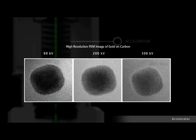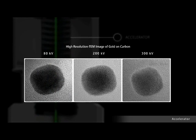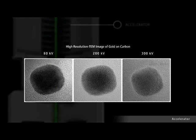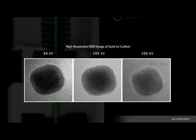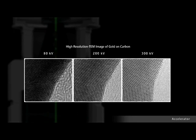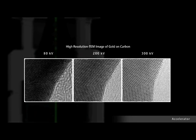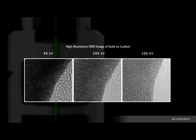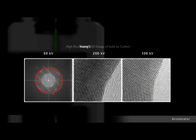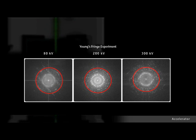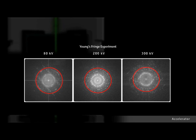This technology, in combination with CS correctors for STEM, delivers unprecedented atomic resolution performance for structural research across the entire acceleration voltage range of 60 to 300 kilovolts. Here you can see the atomic resolution is preserved across the acceleration voltage range, shown in the atomic images of gold acquired at different voltages. Young's fringe experiments show the stability of the deep sub-angstrom information transfer across the acceleration voltage range.